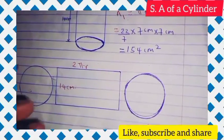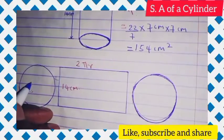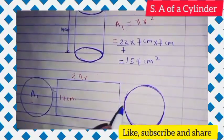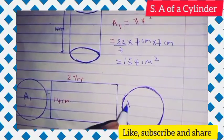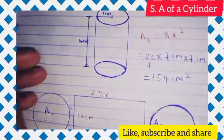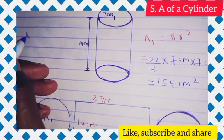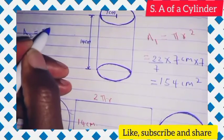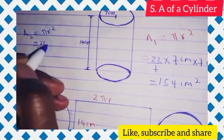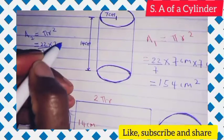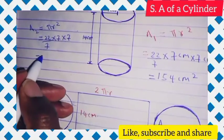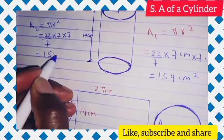So that is the area of the top, A1 = 154 cm². Now A2 — the bottom circle — is also given by πR². You substitute: π is 22 over 7, our radius is 7, so 7 times 7, which gives you 154 cm².